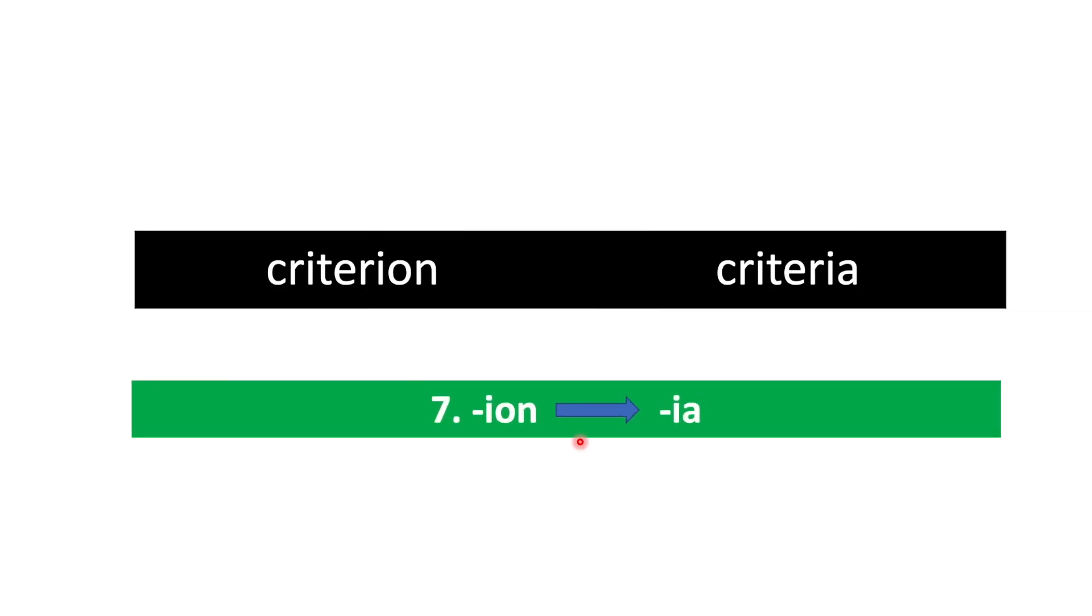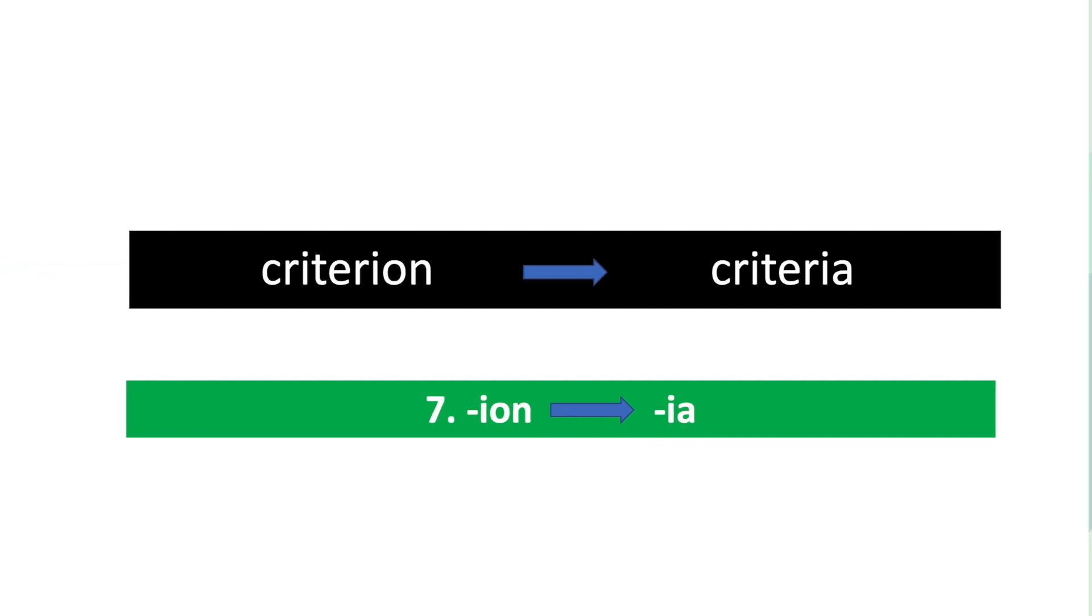And the seventh one: words ending with ion for singular and for plural, ia. Such as criterion/criteria.